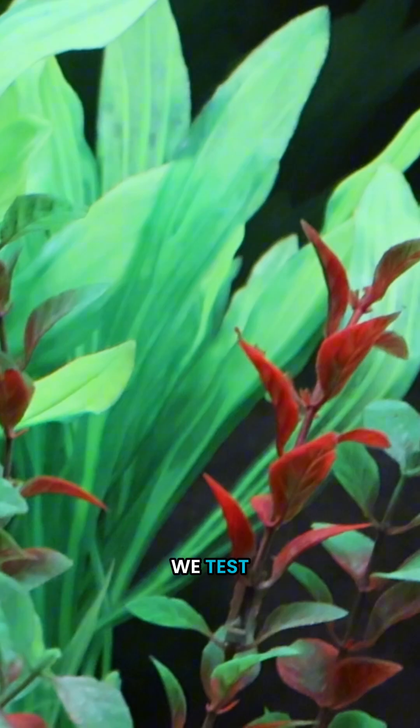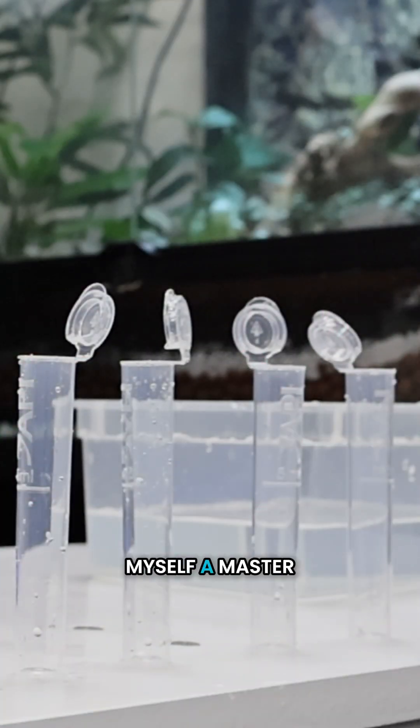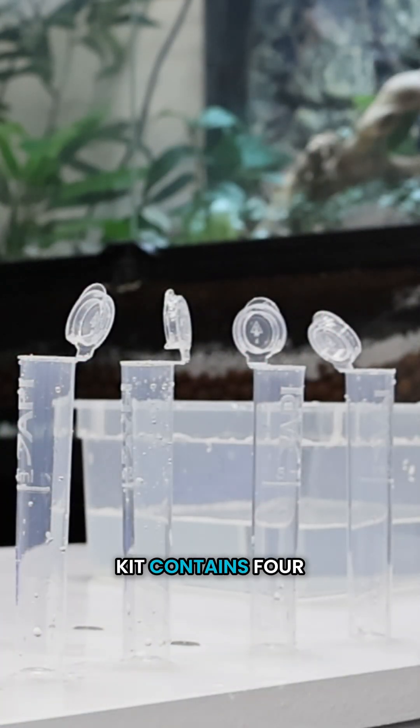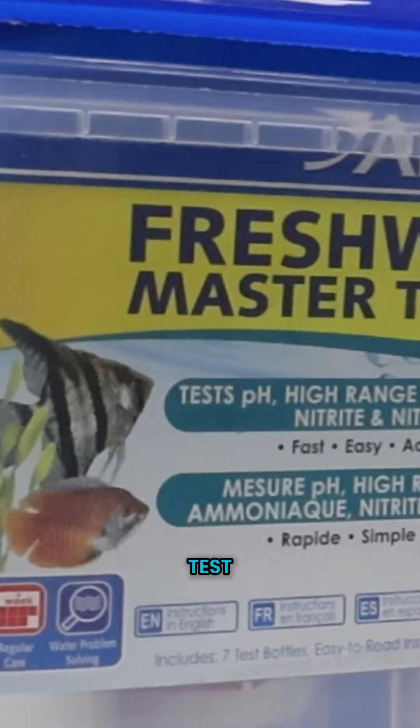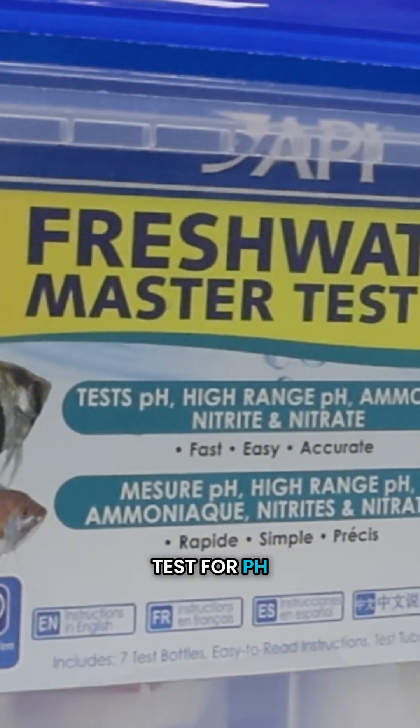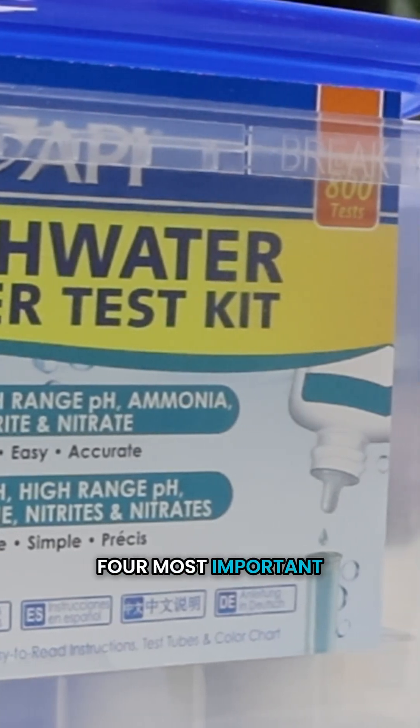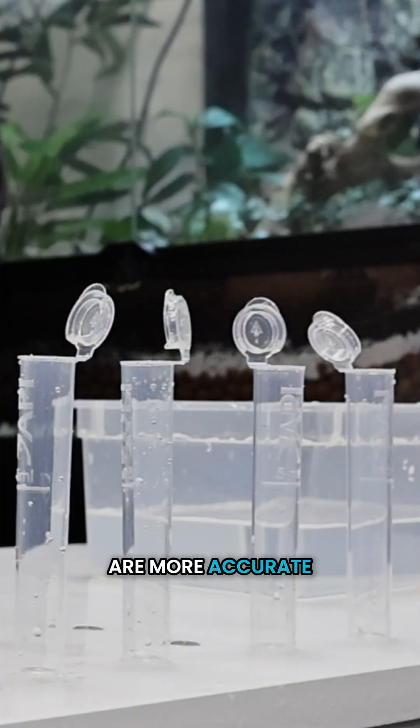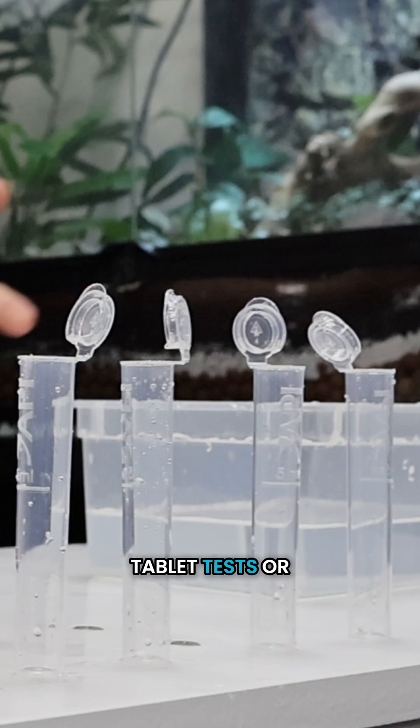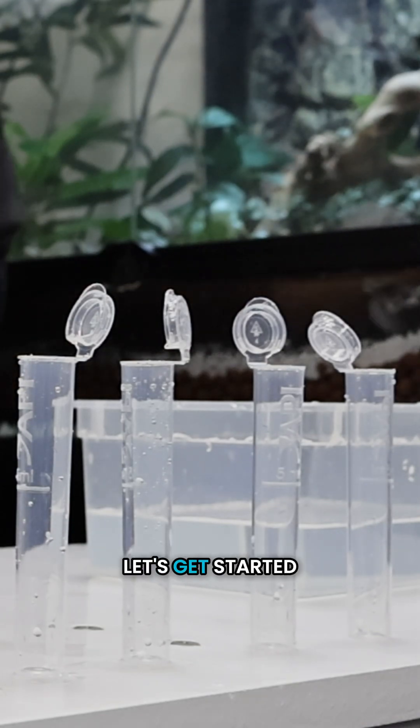That's why we test. So I've got myself a master test kit—a master test kit contains four or more tests—and this one tests for pH, ammonia, nitrite, and nitrate. Those are the four most important. Liquid tests are more accurate than tablet tests or dip strips, so I've gone for liquids. Let's get started.